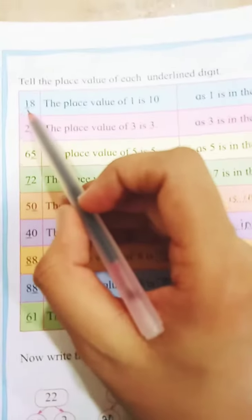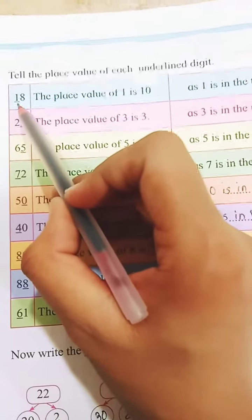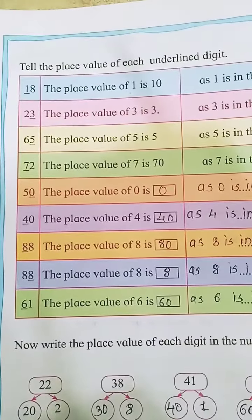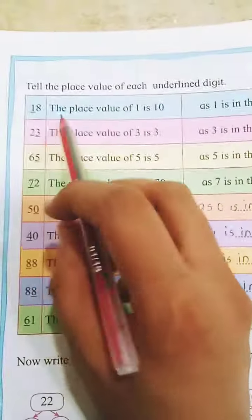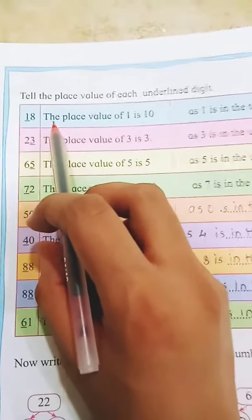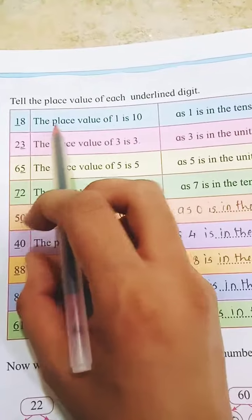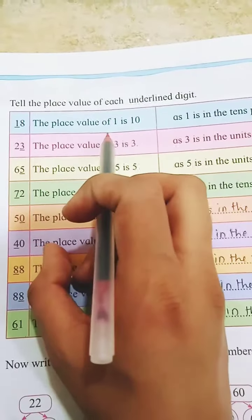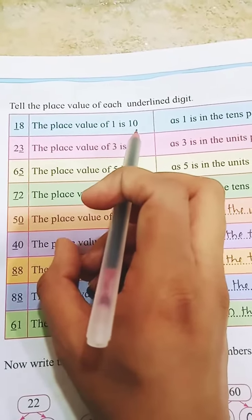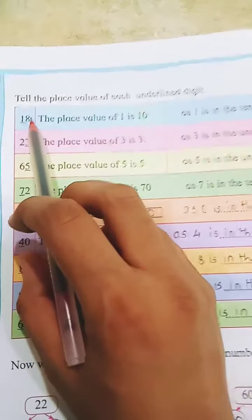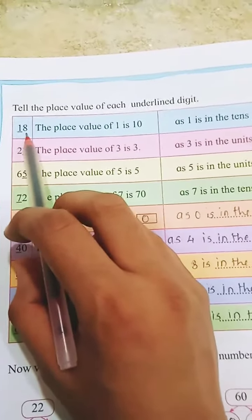Our first number is 18. Can you see the underline is at the 1? They have solved this example for us. The place value of 1 is 10. Now, see children, they have a two-digit number.